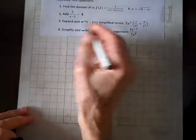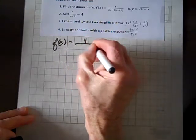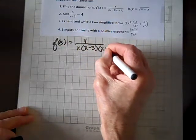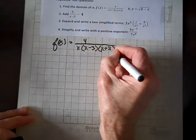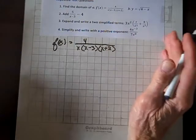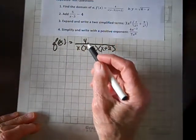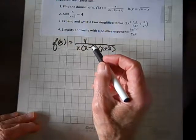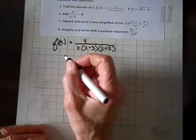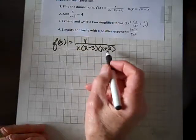Okay, so we have to find the domain of f(x) equals 4 over x times (x minus 3) times (x plus 2). Now the domain is all real numbers except for those values for which the function is undefined. And will you agree division by zero is undefined? It's impossible.